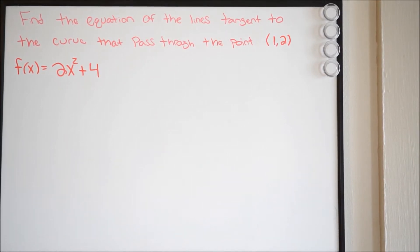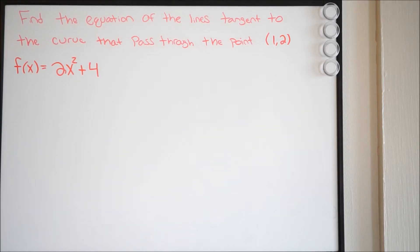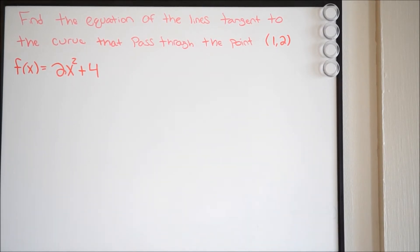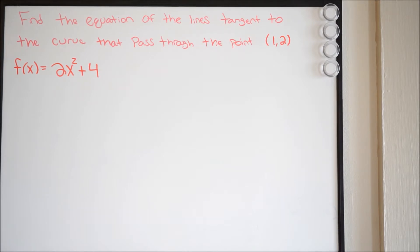In this particular problem, we want to find the equation of the lines tangent to the curve that pass through the point (1, 2). We have done problems like this in the past, however, this one is a bit different because in the past we found lines tangent to a curve when we know the point on the curve. In this case, we're not given any points on this curve — we're just given the point that the line or lines must pass through.